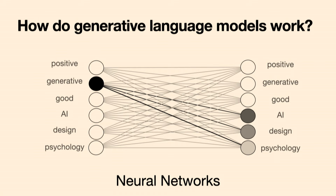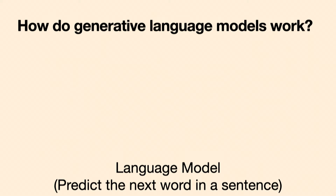A neural network language model is learning associations between words. When it sees a word like 'generative,' it learns what types of words tend to come next and learns some distribution over those — so 'generative' is likely followed by 'AI,' but also maybe 'design' or 'psychology.' The key part really doing the heavy lifting is what we call the language modeling task: predicting the next word in a sentence over a very large amount of text.